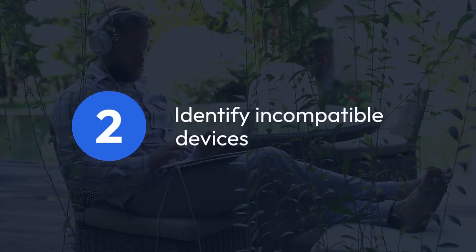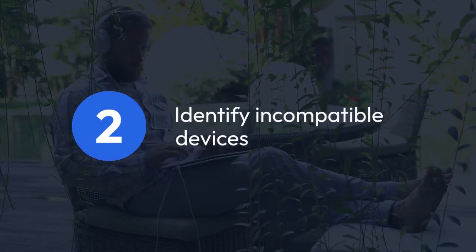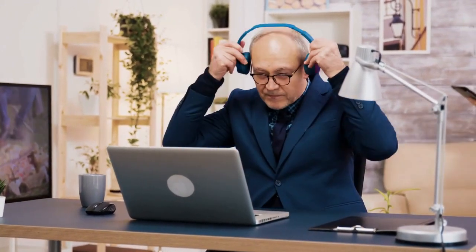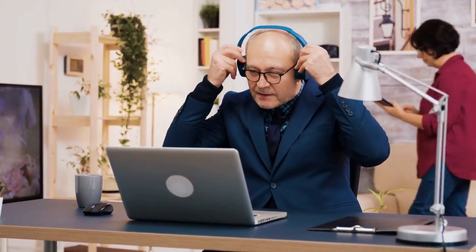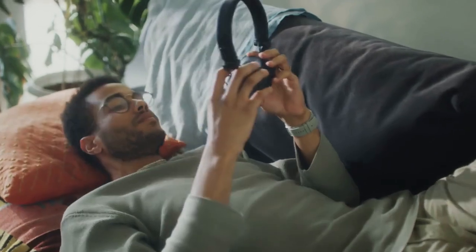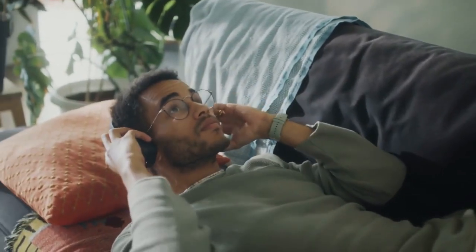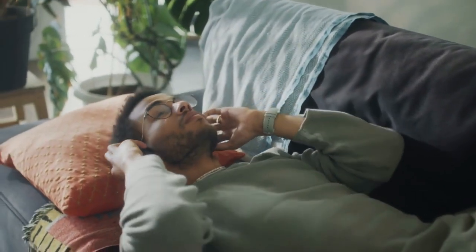Step 2: Identify incompatible devices. Determine which Sonos devices in your system are incompatible with Sonos S2. This is crucial — only downgrade if you have at least one device that can't be updated to S2.